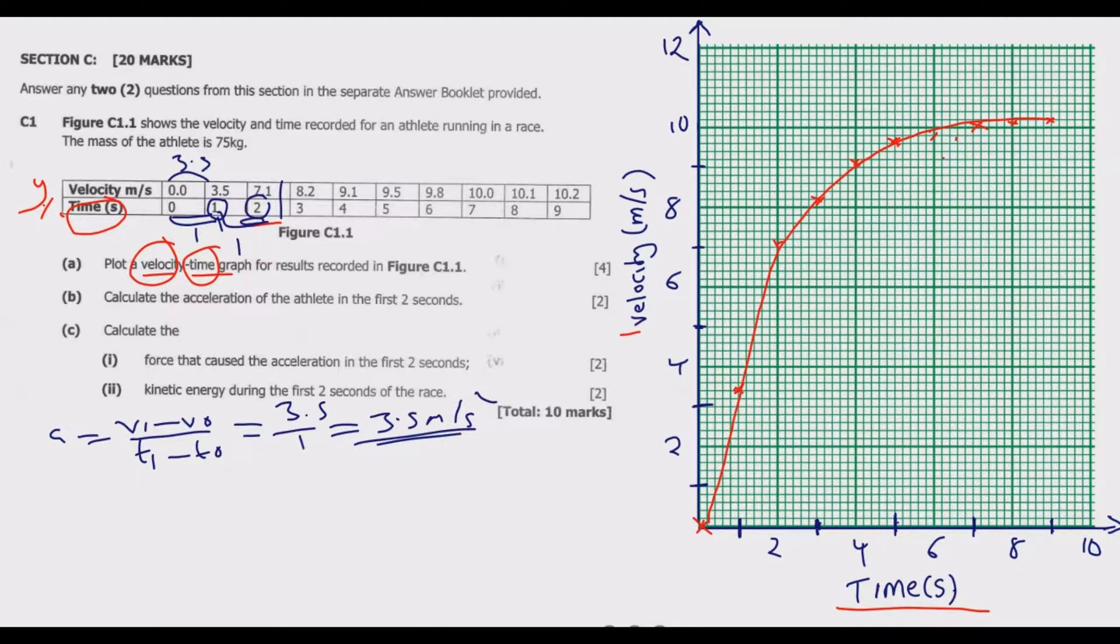This is in the first second. In the second second, which is this one, the change is 1 then the change here is basically 3.6. So if I have to find acceleration 2 in the second second to be velocity 2 minus velocity 1 over time 2 minus time 1, which is 7.1 minus 3.5 over 2 minus 1, which is basically 3.6 over 1 which is 3.6 meters per second squared.